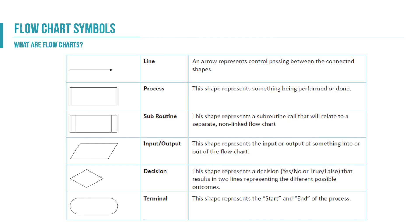These are the six things we need to know for the OCR GCSE: a basic line, a process, a subroutine, an input and output block, a decision block, and a terminal. The terminal always goes at the start and the end of any process that isn't a subroutine. Pause the video and make some notes on those different symbols — you may wish to look back at the friendship algorithm to see how they are used.